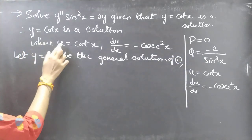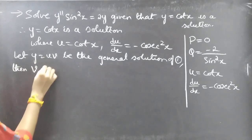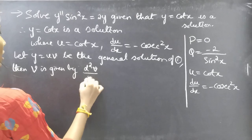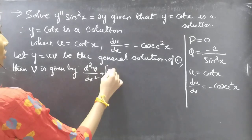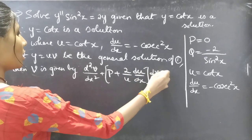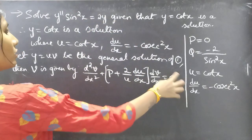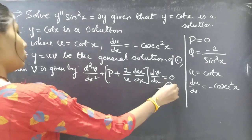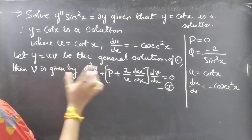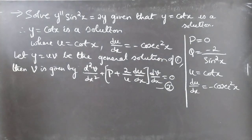We already have u, but we need to find v. Then v is given by the formula: d²v/dx² + (P + (2/u)·(du/dx))·(dv/dx) = 0. Since our equation is homogeneous (RHS = 0), we can use this formula to find v.